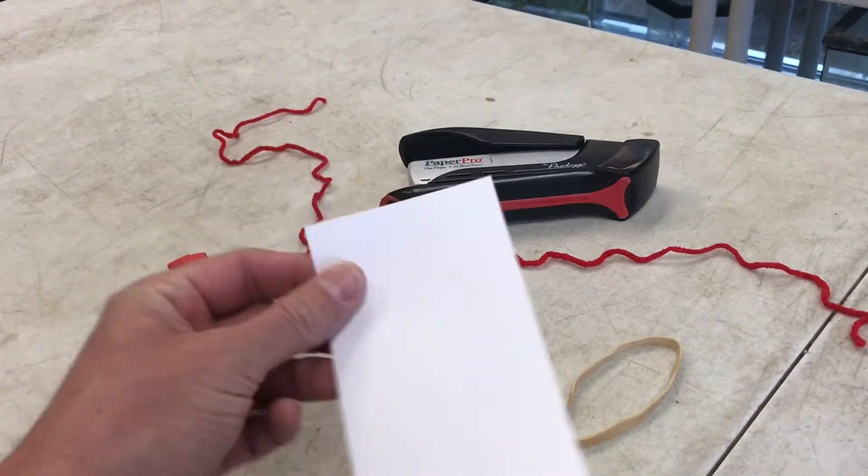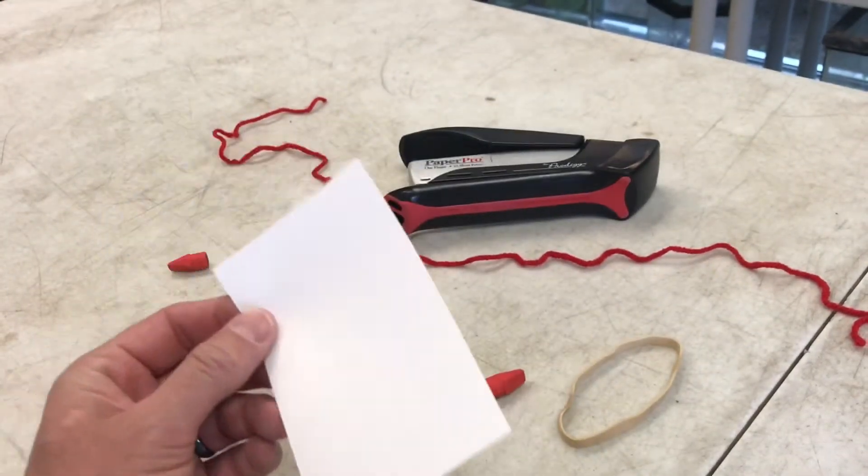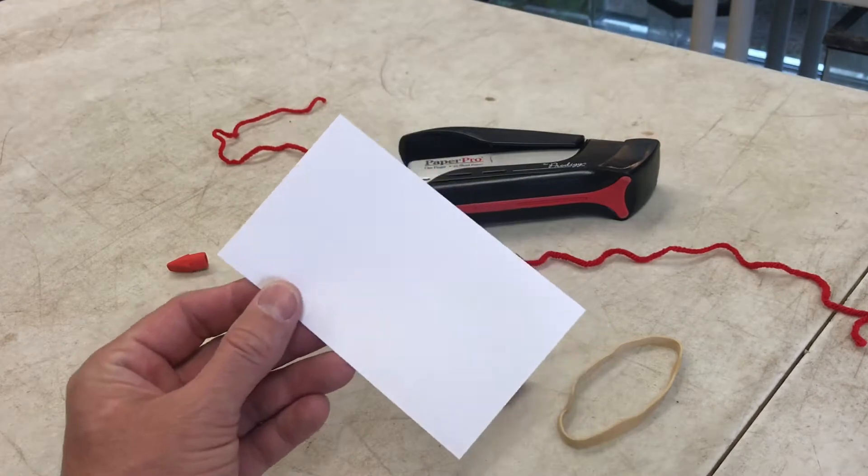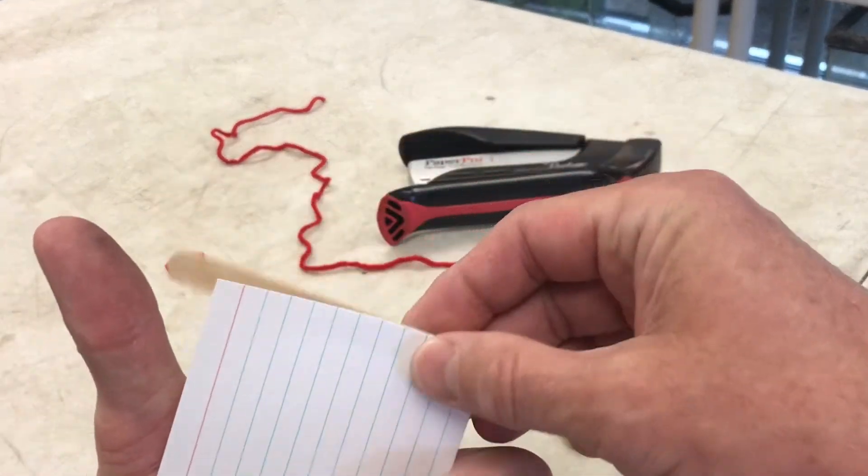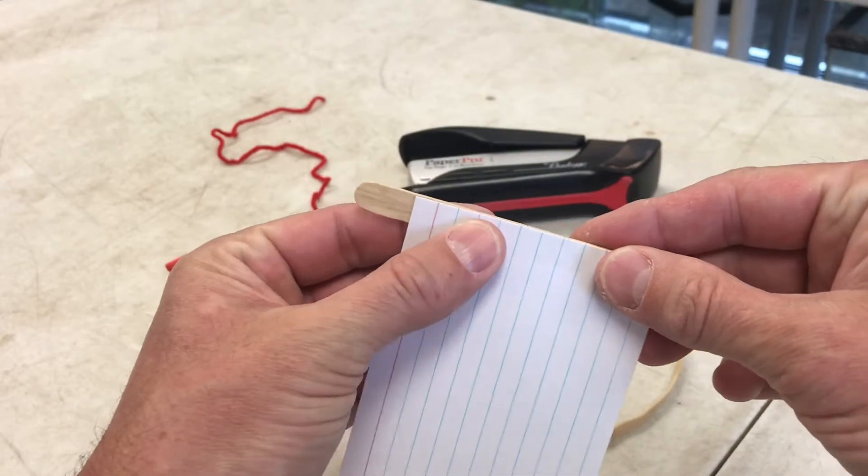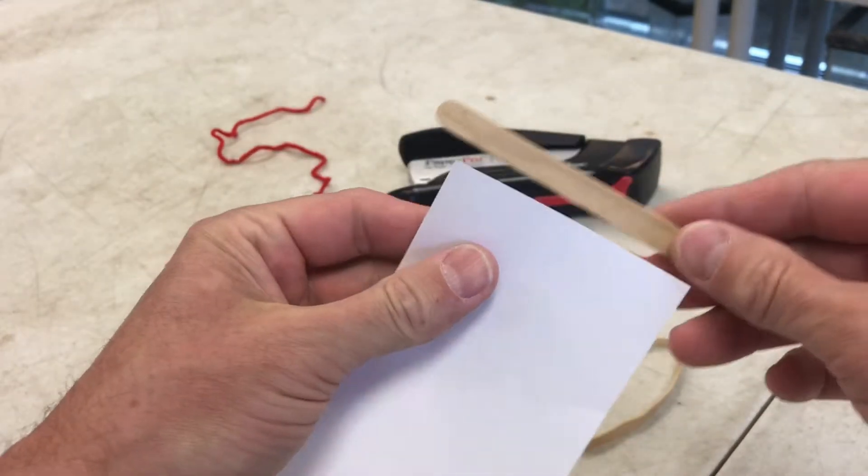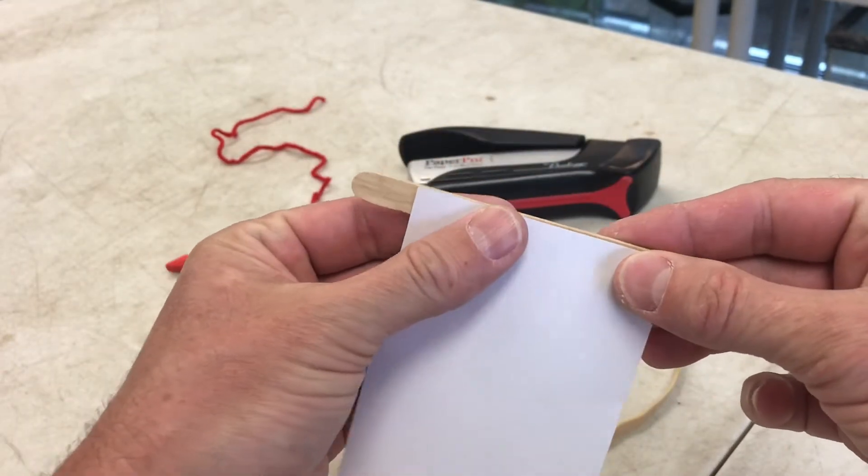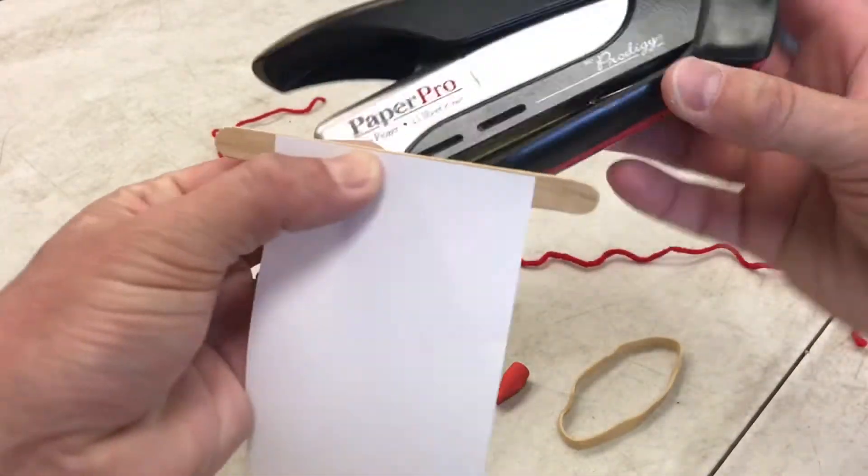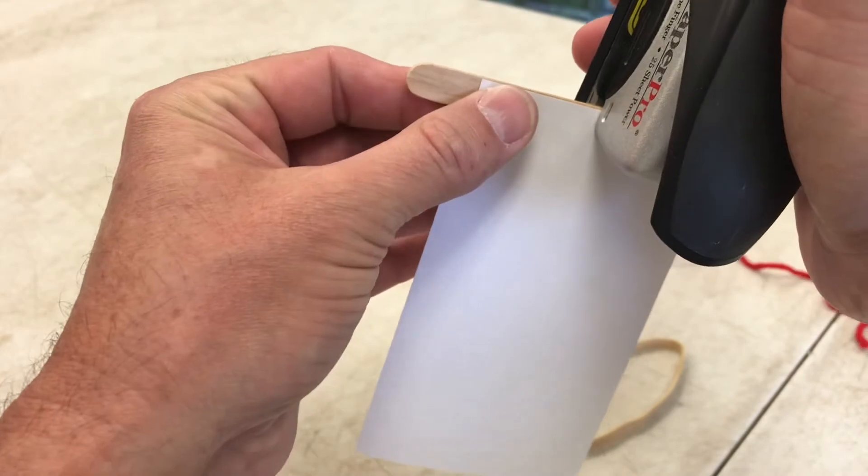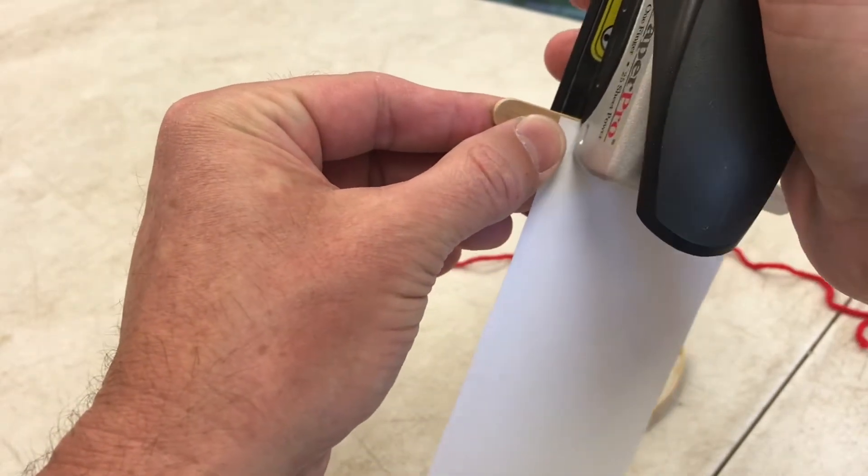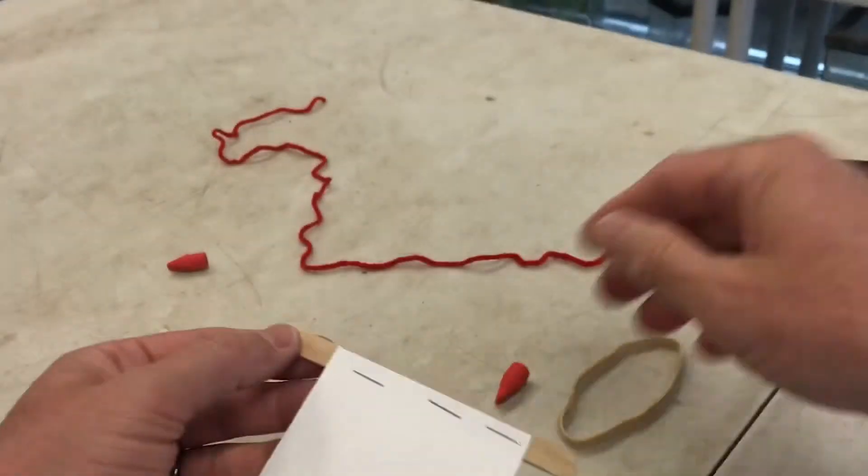So the first thing you're gonna do, this is basically gonna be the wing of our bug. If you want, you can have students or you can choose to decorate it and draw on this. We're gonna put a couple of staples, like three seems to do the trick, right across.